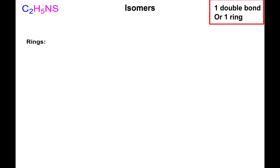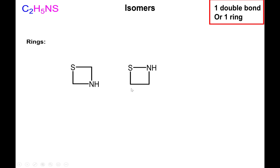Now for rings: with four non-hydrogen atoms (2C, S, N), a four-membered ring is possible incorporating sulfur and nitrogen. Sulfur in the ring already has two bonds, so no hydrogen needed; nitrogen needs one hydrogen for three bonds. The sulfur and nitrogen can be placed opposite each other or adjacent to each other in the ring.